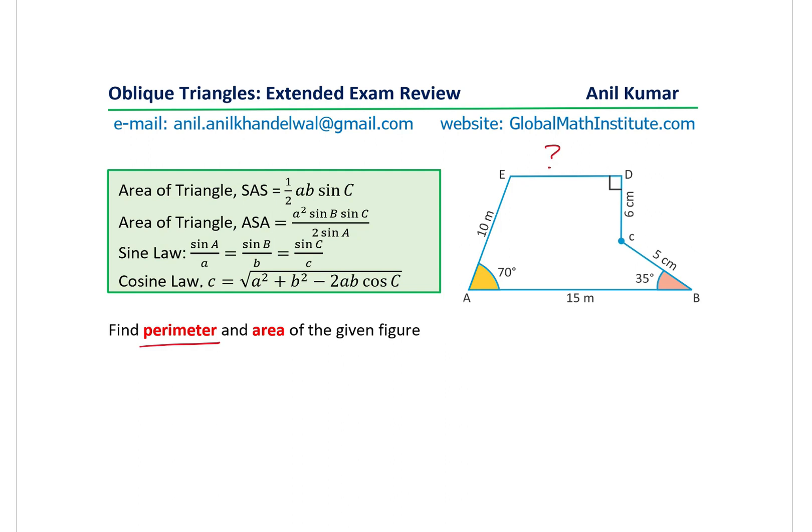We can begin with this part. We are given two sides and the included angle, and therefore we can solve a triangle. So let me draw a line connecting A with C. In that case, this particular triangle ABC can be solved using cosine law.